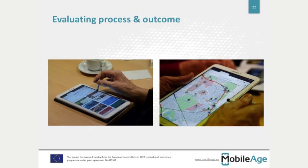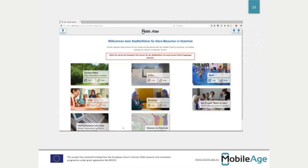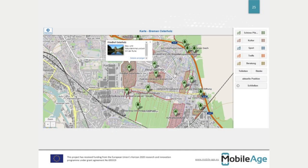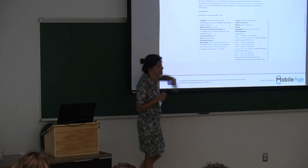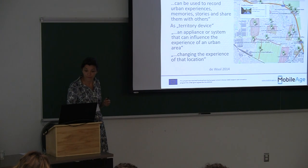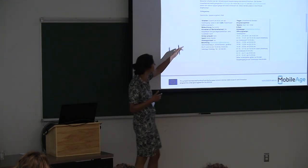In the end there was a part where we evaluated both the process and the outcome. The app has a start page with different categories: nice places, culture, consulting, sports. When you click on them, you get to a map with different nice places, a short description, and a list view. Clicking on a place gives a description with the various attributes people were interested in — for example, toilets, lighting, sports facilities, whether you can sit there or not, whether there are benches.